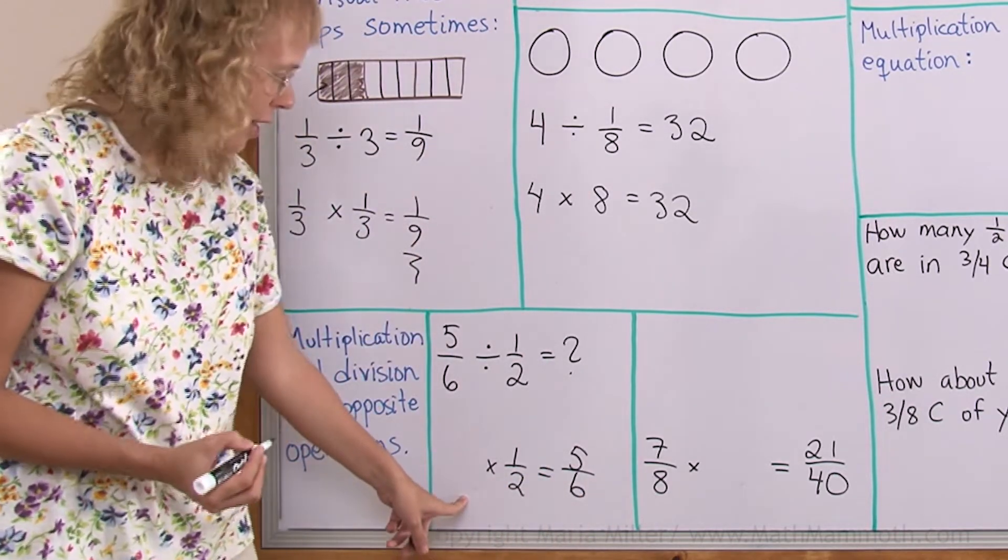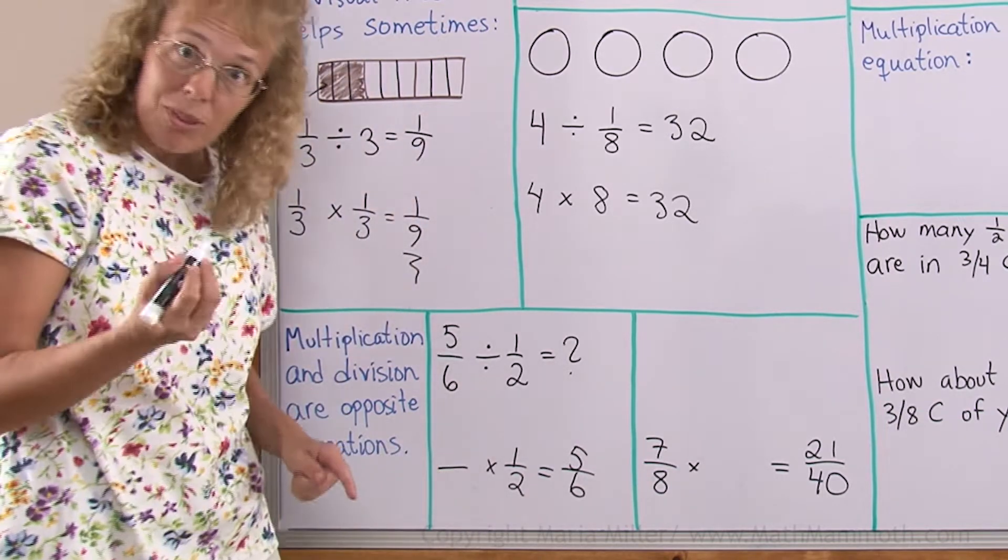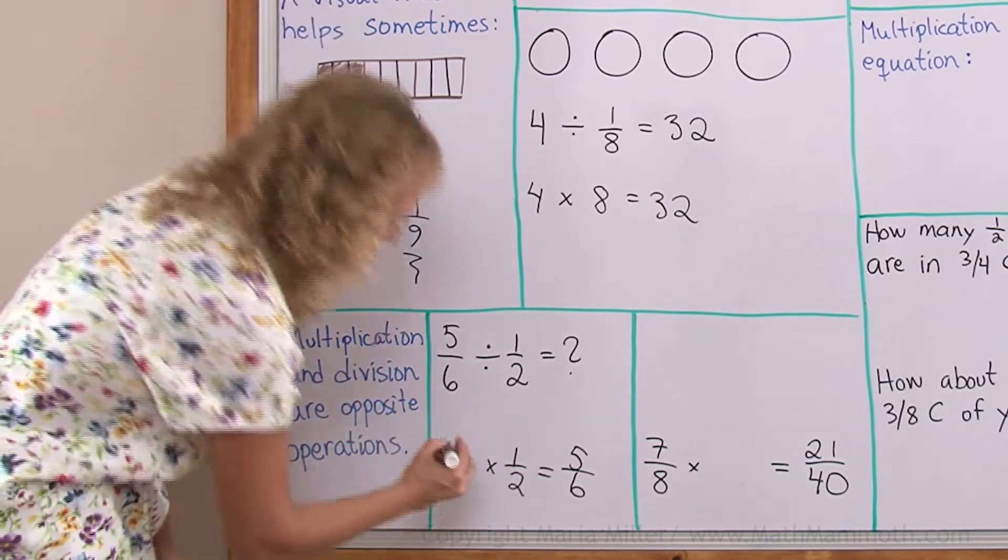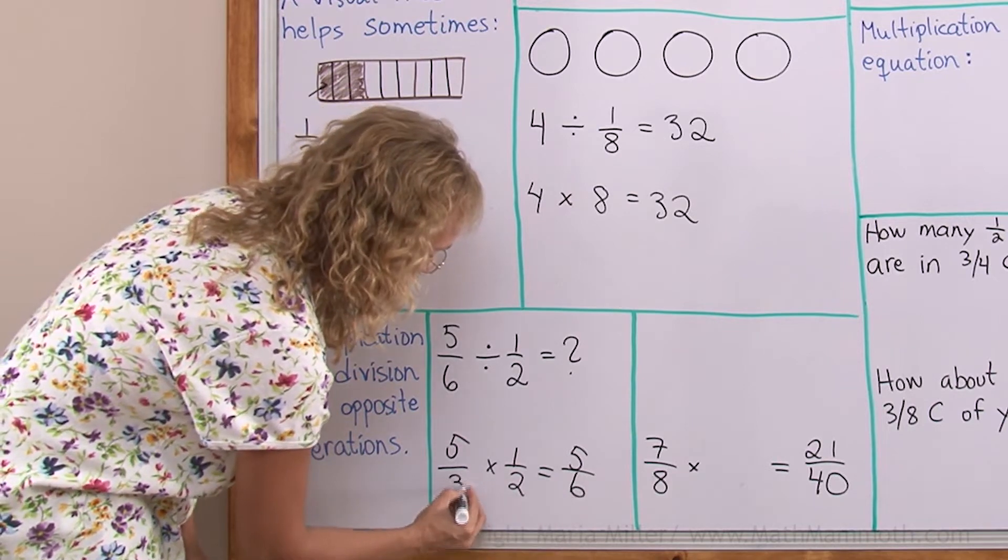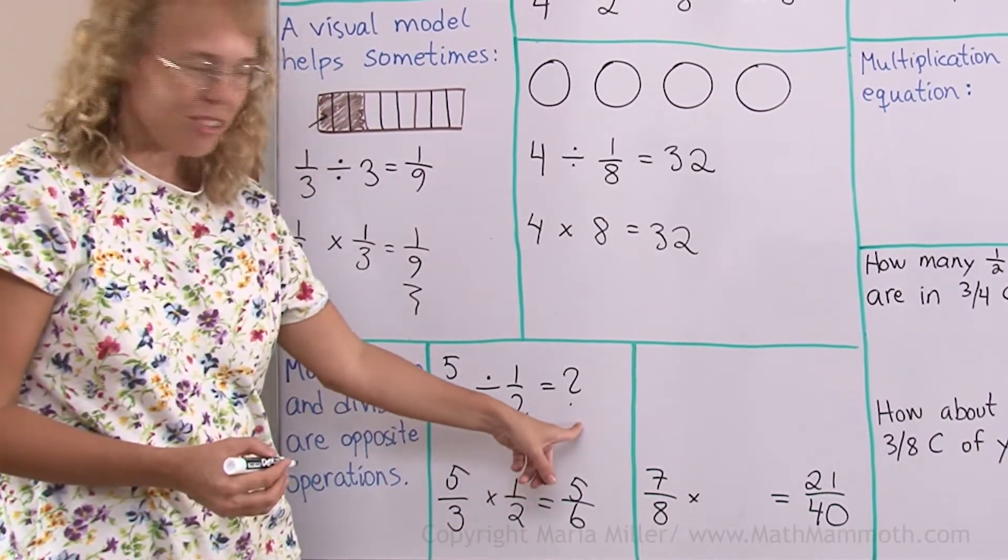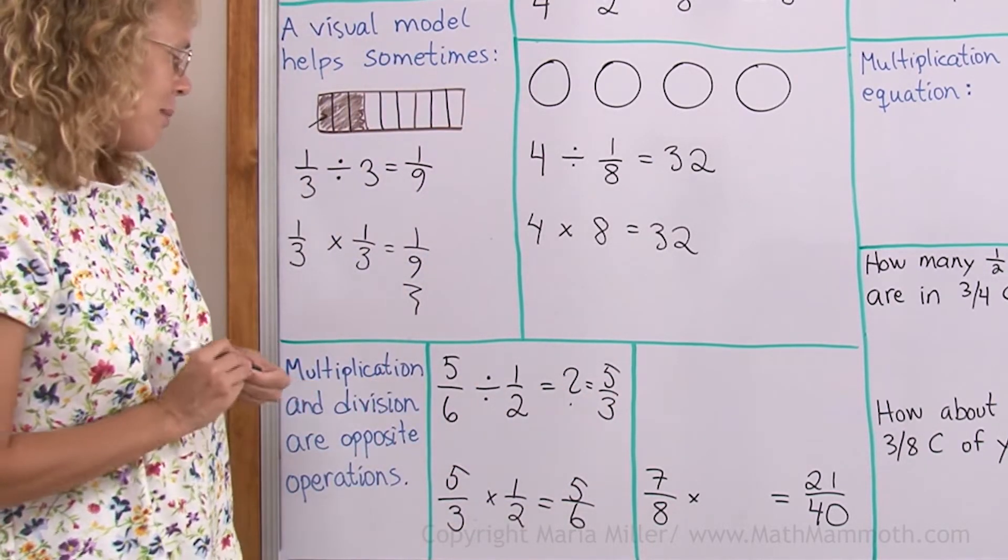So what number would go here? Well, I can think, okay, if it's going to be a fraction, then in the top numbers, something times 1 has to equal 5—that's 5. And something times 2 has to equal 6, so it is 3. So 5/3 is the answer to this. It is 1 and 2/3 as a mixed number.